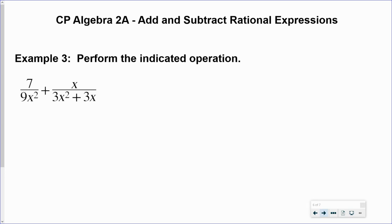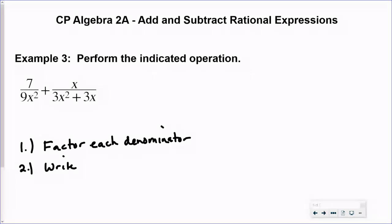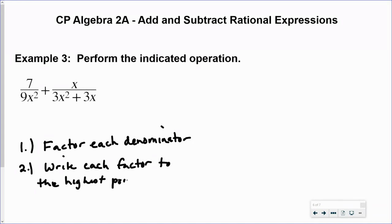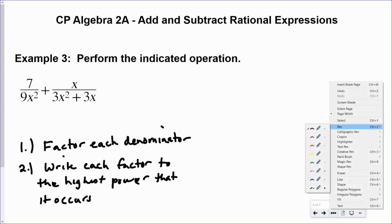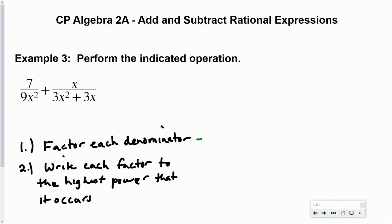The way that we're going to find the common denominator is to factor each denominator. That's the first part. Then we're going to write each factor to the highest power that it occurs. So let's go ahead and factor each denominator.